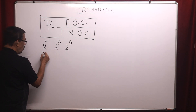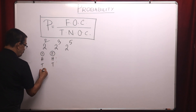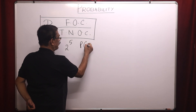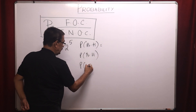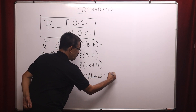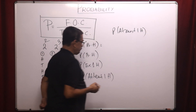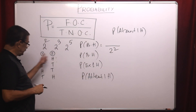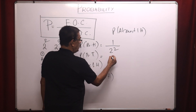Now consider I throw two coins. The results are: both head, both tail, first head and second tail, or first tail and second head. Questions can be: what is the probability of both head? Both head is only one case, so the answer is 1 divided by two to the power two. Both tail is also only one case, so 1 divided by two to the power two.